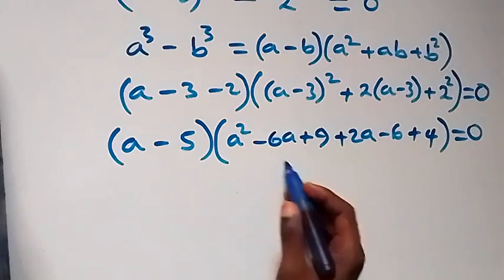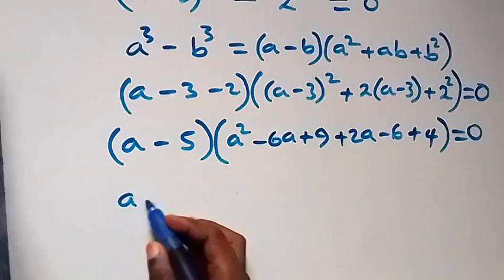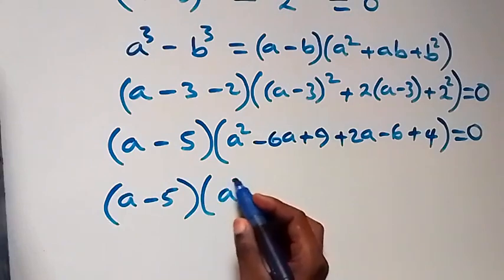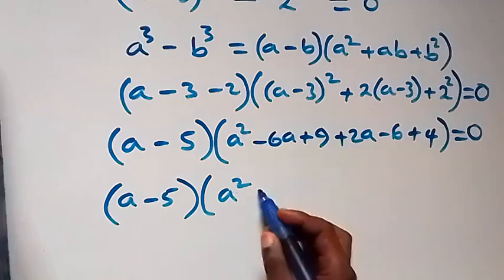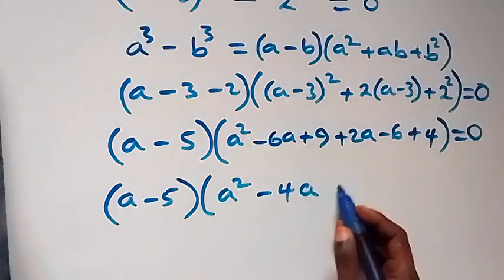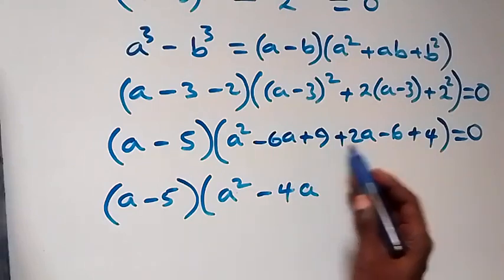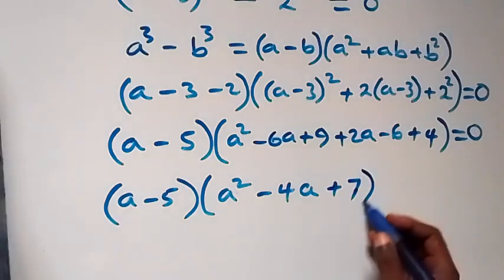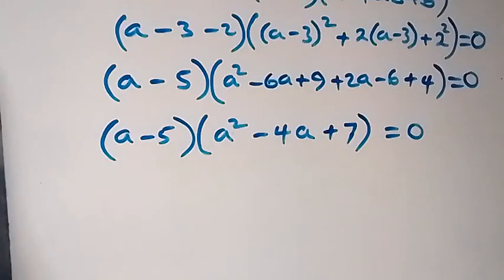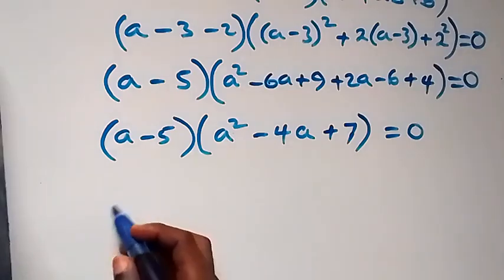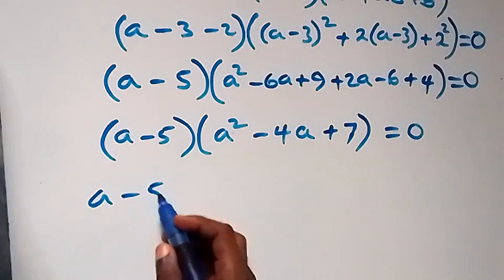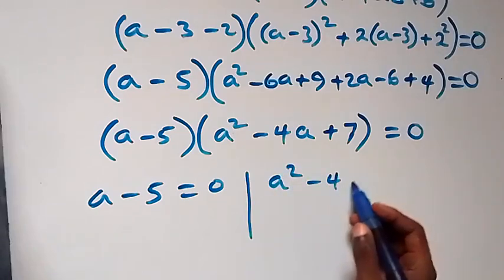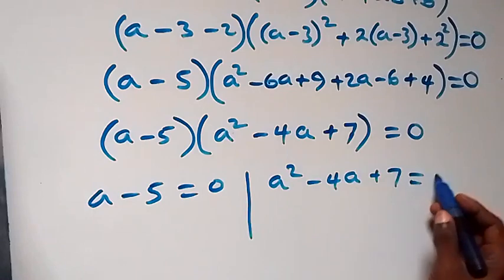From here we have two possible cases: a minus 5 equals to 0, giving a equals to 5, or we have a squared minus 4a plus 7 equals to 0. Solving this quadratic equation, we have a equals to [minus (minus 4) plus or minus square root of (minus 4) squared minus 4 times 1 times 7] over 2, that is 16 minus 28, giving minus 12 under the root, over 2.